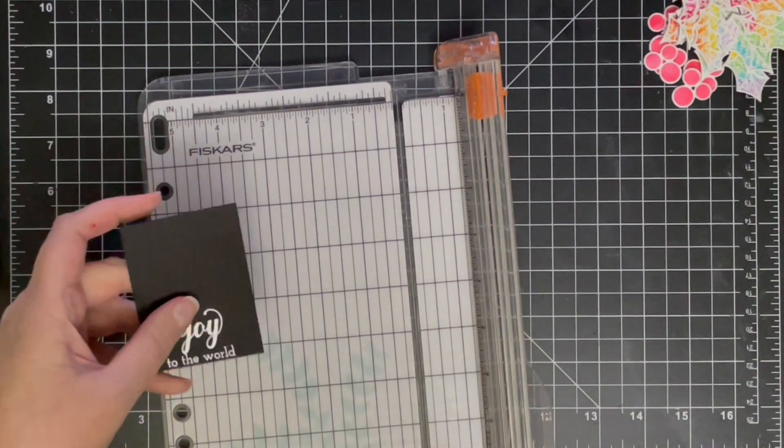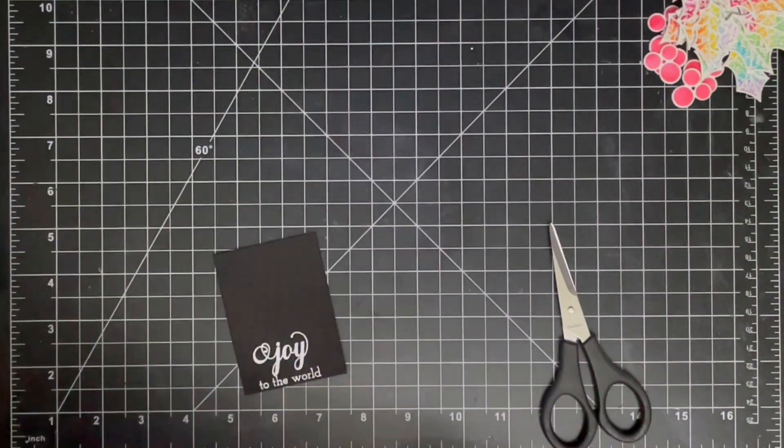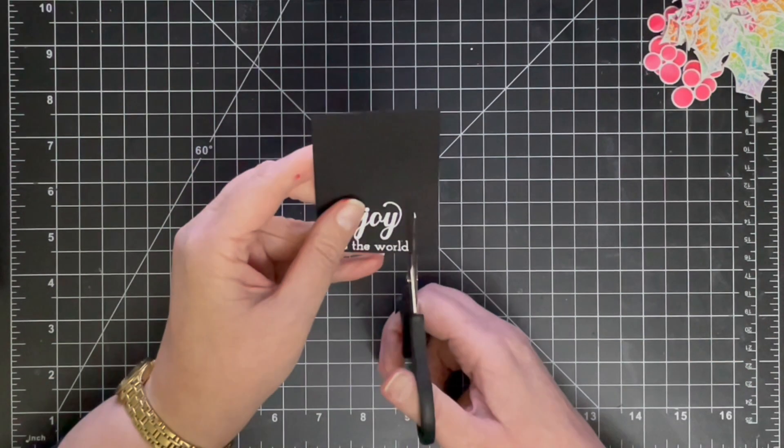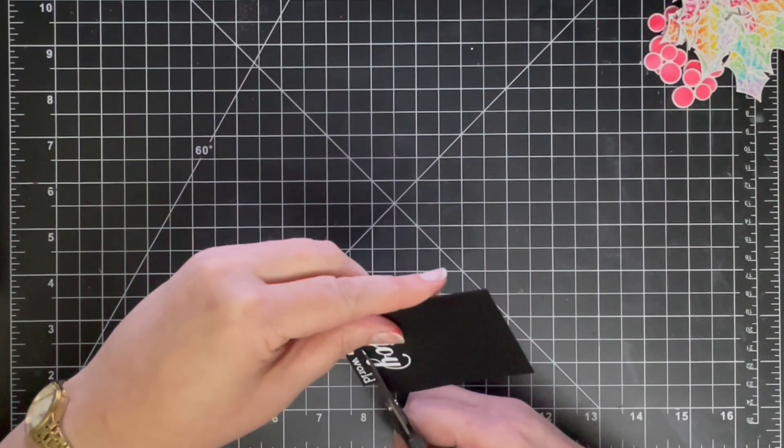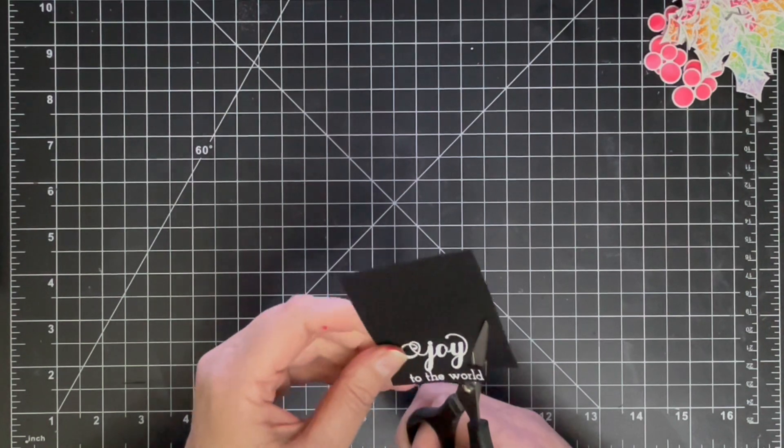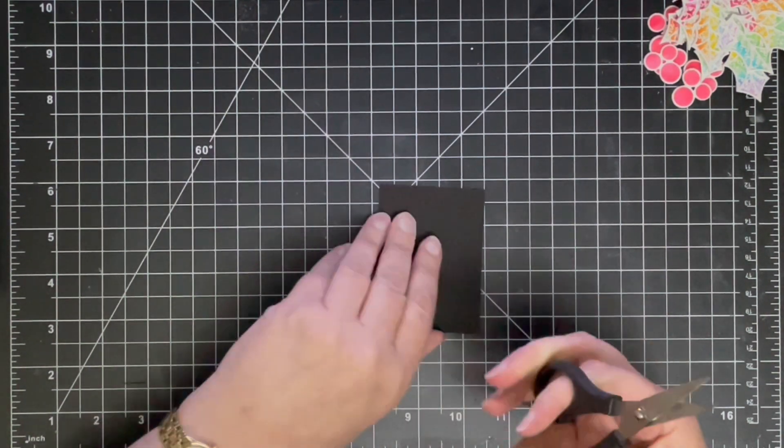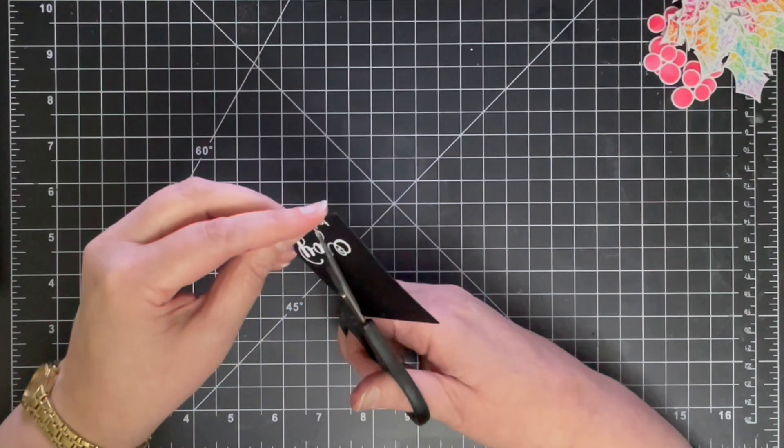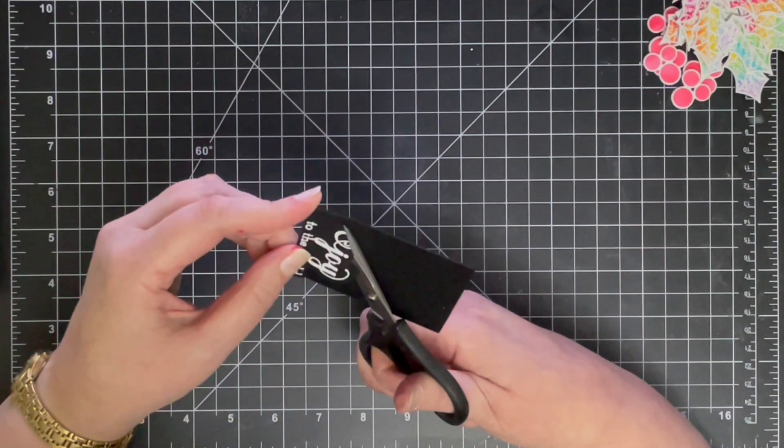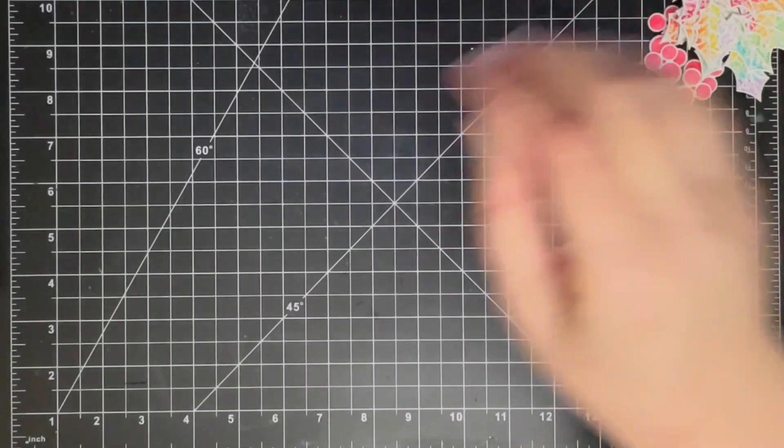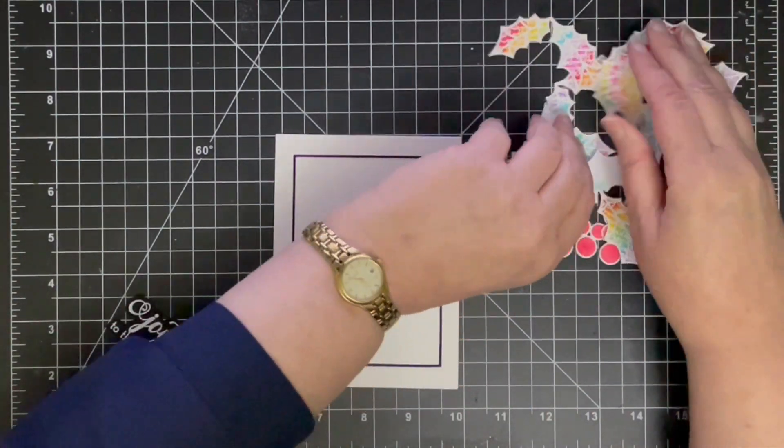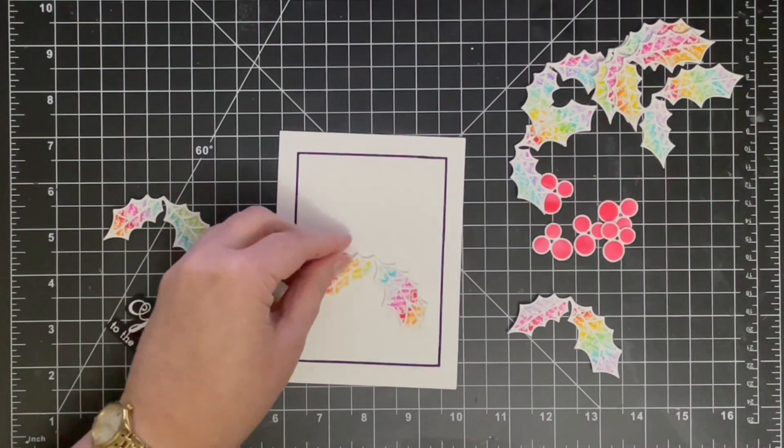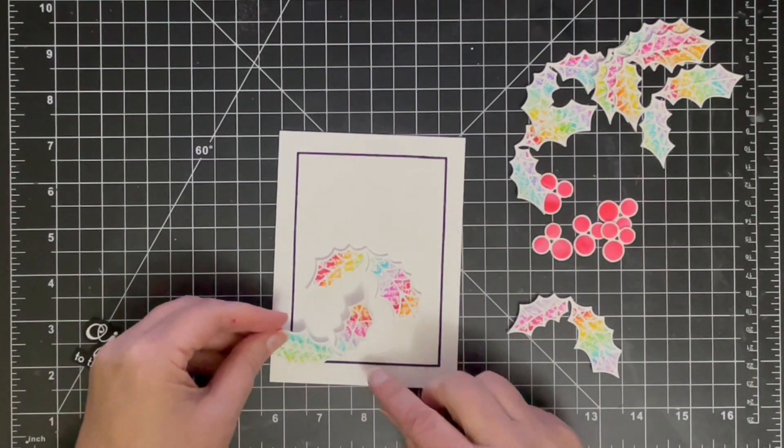Okay, so a little trick that I do quite often is instead of just cutting down my sentiment to a square or a rectangle or even a circle, I like to cut straight lines where there are straight lines on the sentiment using my paper trimmer, but then where there aren't straight lines, I use my scissors to just fussy cut around the sentiment. And that basically means that less of my background is going to be covered up by that sentiment panel.